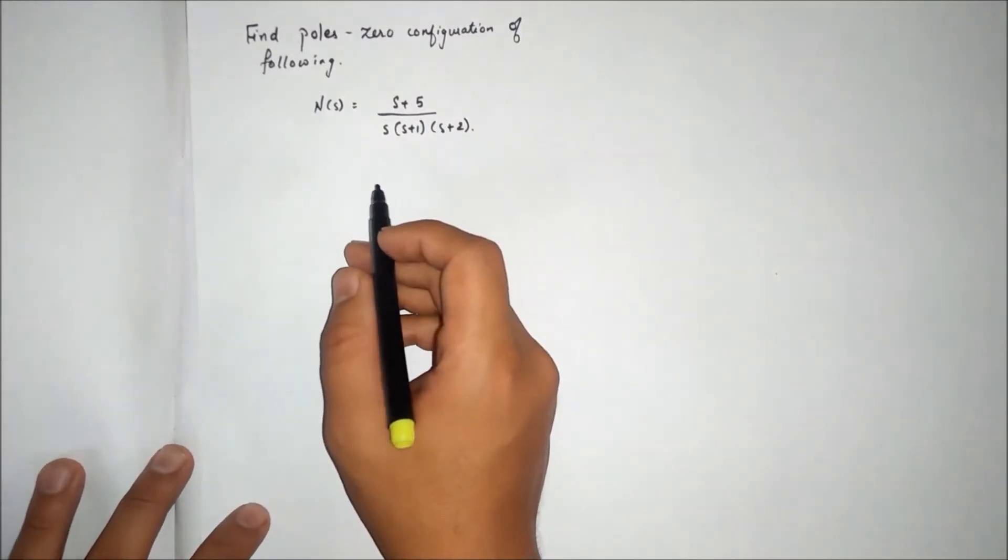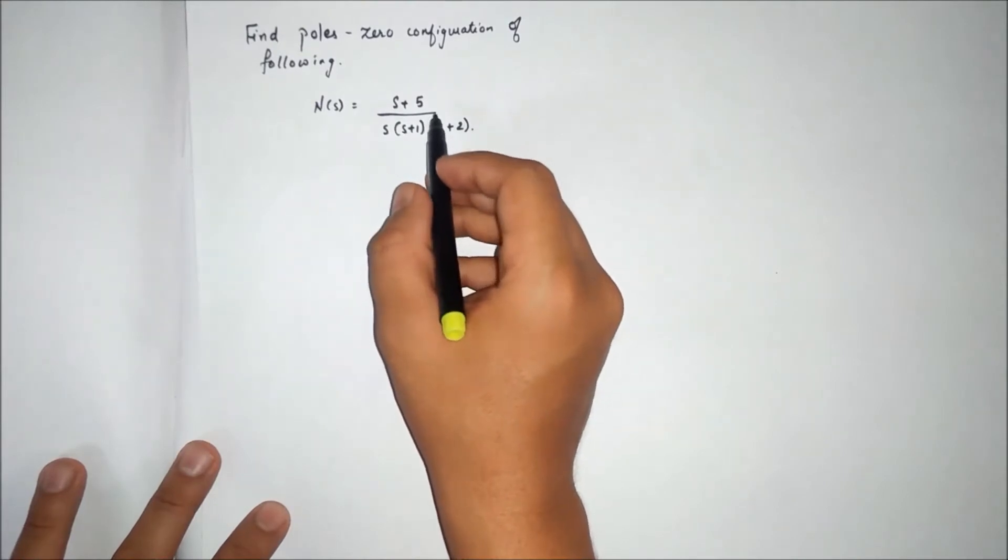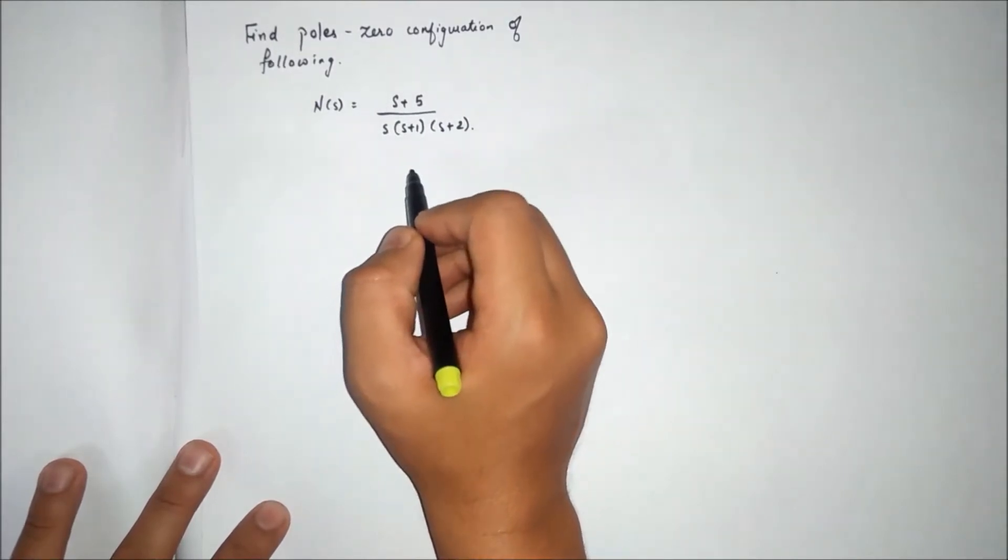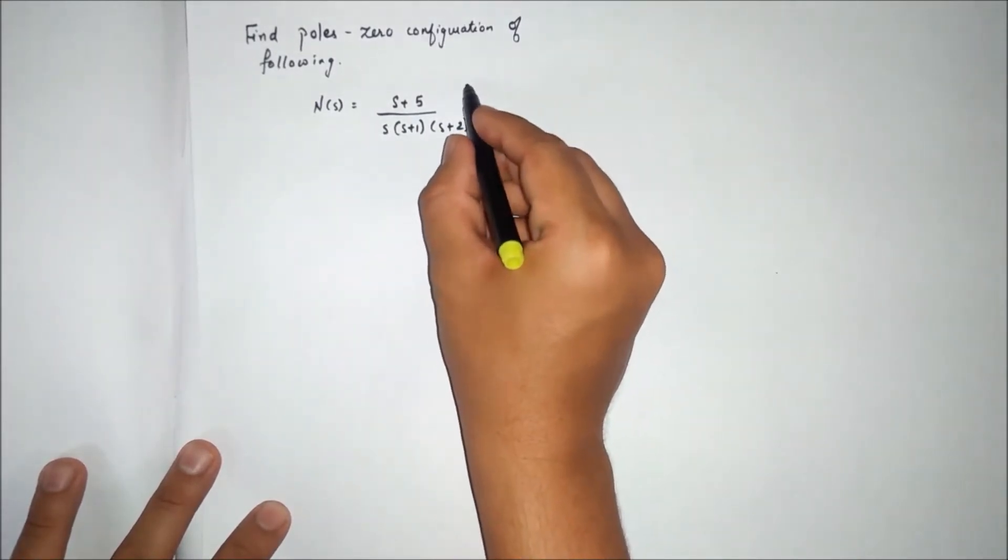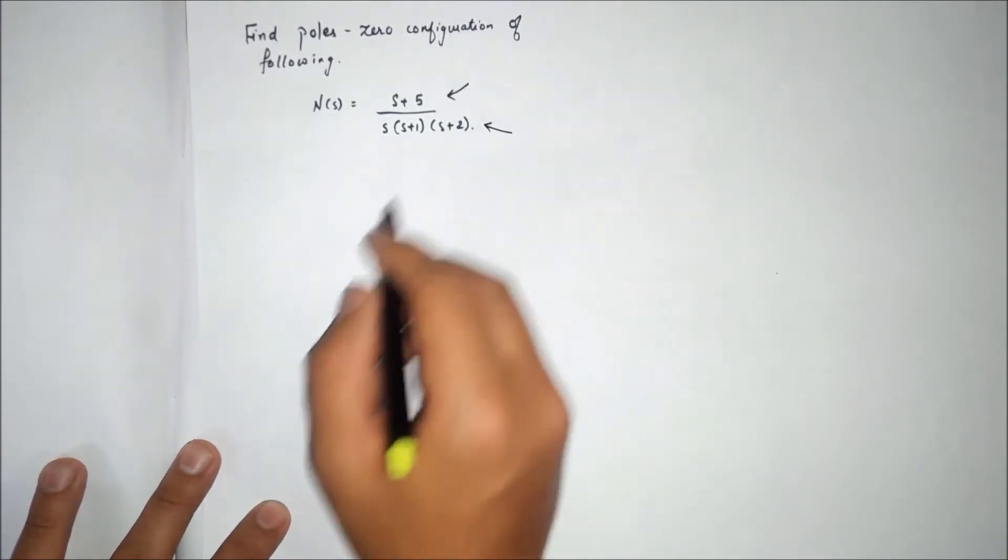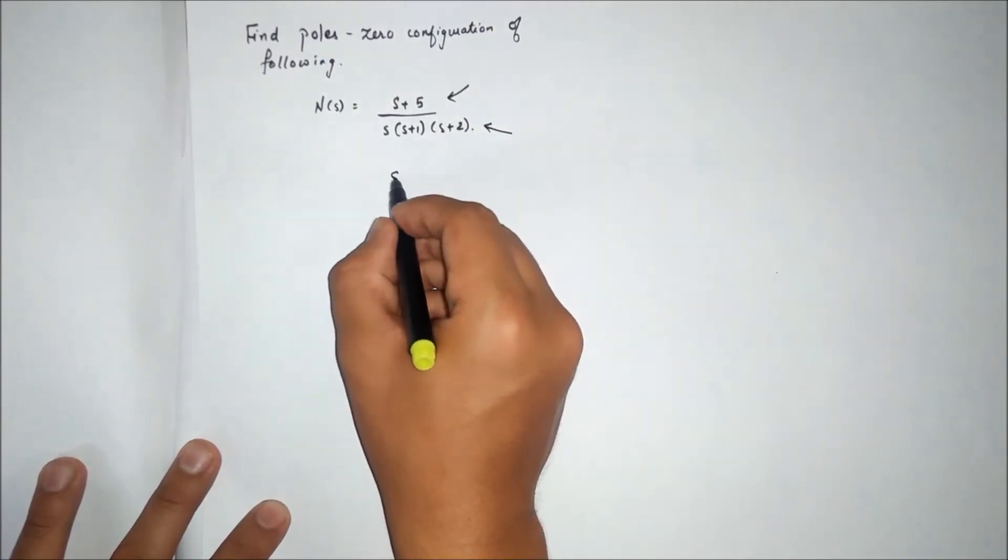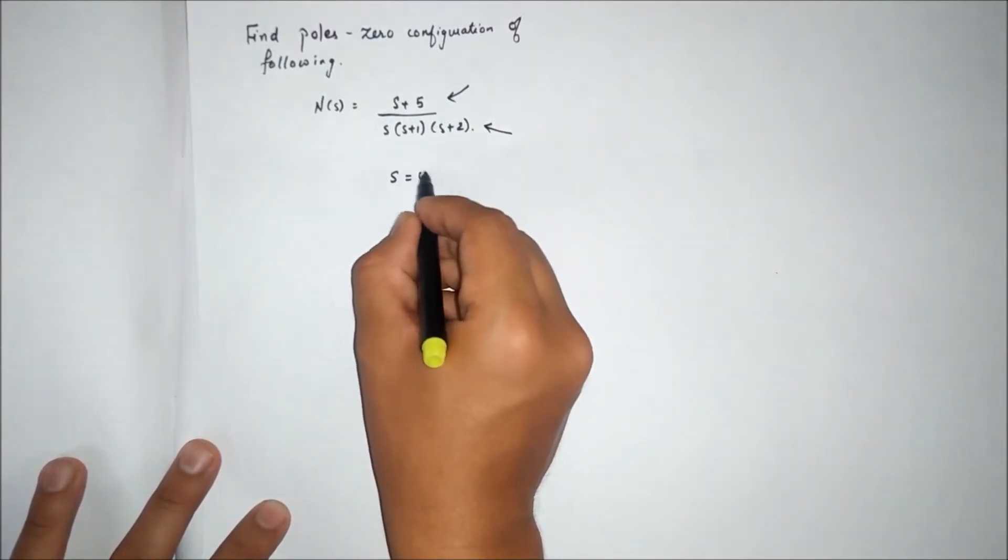Find poles and zero configuration of the following. We have to find the poles and zeros. Zero is the numerator part and pole is the denominator part. To find out the poles and zeros, s must equal to zero.